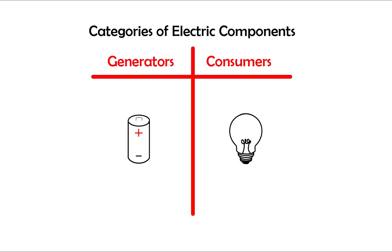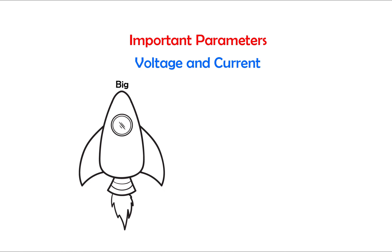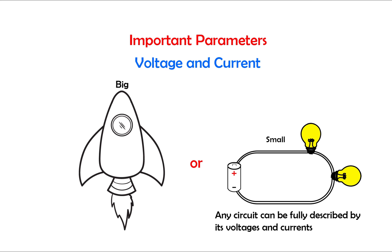For now, let's keep it simple. There are two fundamental parameters to describe any circuit: voltage and current. No matter how big or small, every circuit is designed to satisfy a specific voltage and current. Also, every circuit can be fully analyzed by identifying voltages and currents within all its parts.